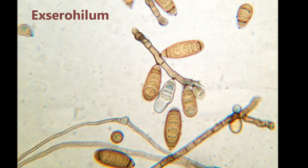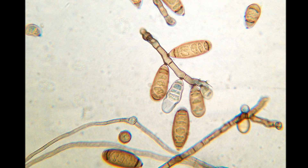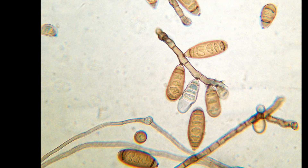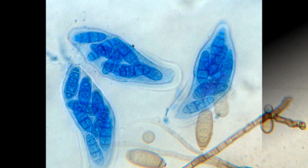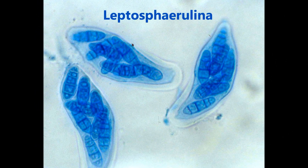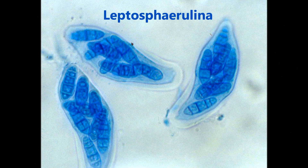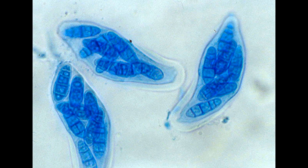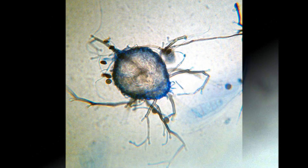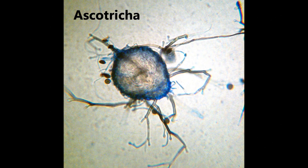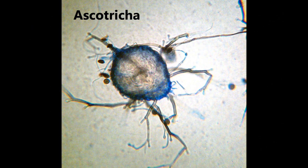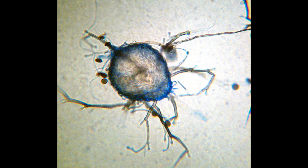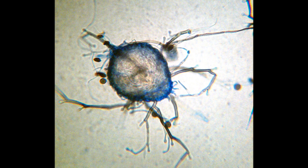The life cycle of microscopic fungi is often obscure. Some fungi form special sacs instead of conidiophores, and those fungi are called Ascomycota, from the Greek word ascus, meaning sac.